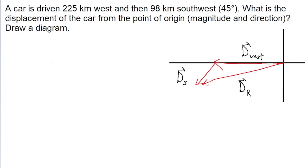Now when the problem asks for the displacement of the car from the point of origin, it's basically just asking for the length of the resultant displacement. It's asking for the length of DR. And to find that, we need to get the horizontal and vertical components of the car's total motion.